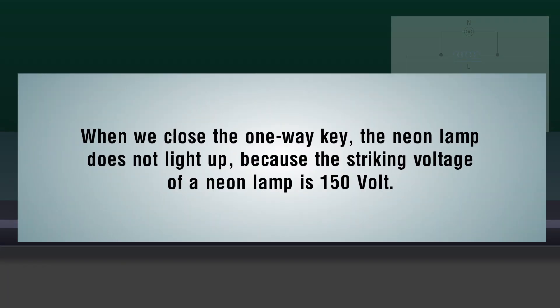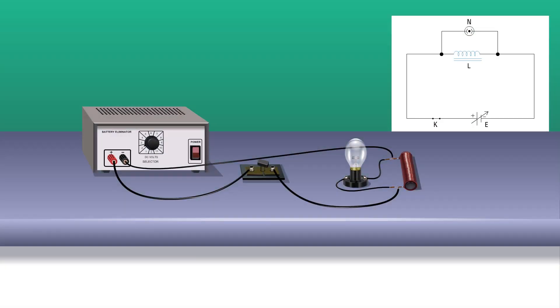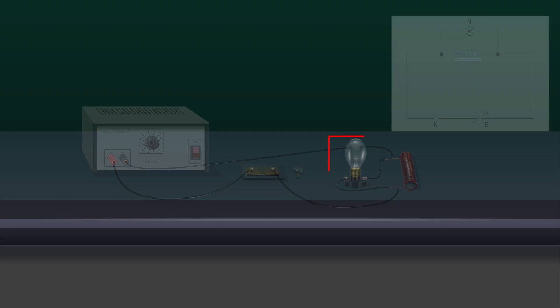When we close the one-way key, the neon lamp does not light up because the striking voltage of a neon lamp is 150 volts. Open the one-way key. Did you see any changes to the neon lamp?